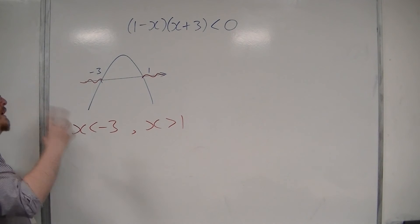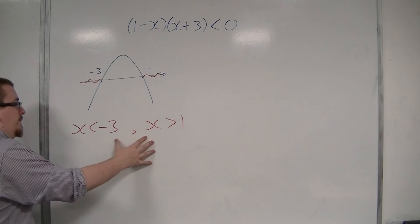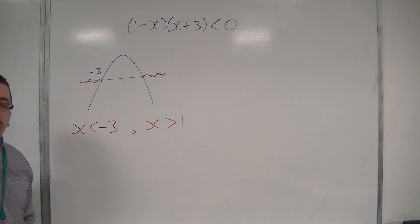The key here was making sure you've got your sketch the right way around. If you hadn't and you got it the other way, then you would have gotten a different inequality that would have been wrong.